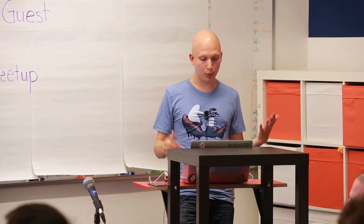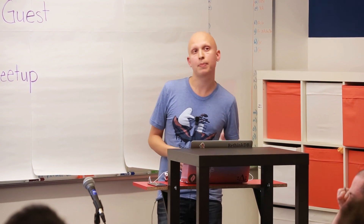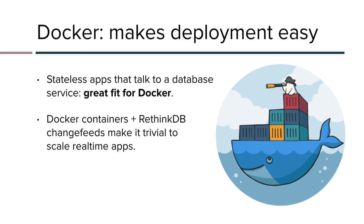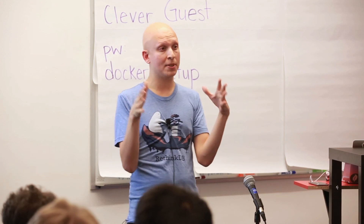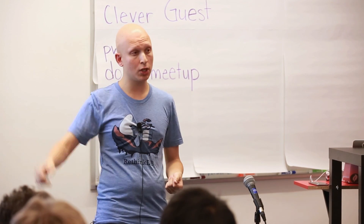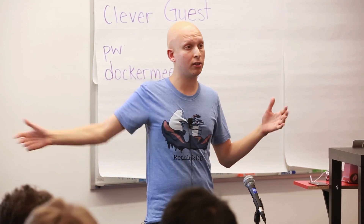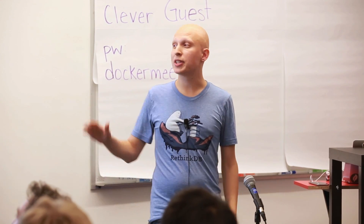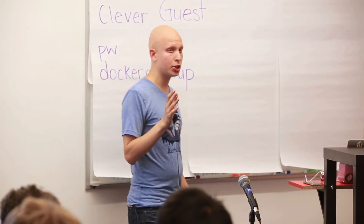If I were to try to deploy this in a normal system, it might be frustrating because of queues and figuring out how to get servers to talk to each other. But Docker actually makes this really easy when paired with RethinkDB. Change feeds allow you to build stateless apps — they don't have to share state or talk to each other. Instead, you can store these stateless apps inside a Docker container, build it locally, ship it up to some service, and run them all in parallel to scale as much as you want.